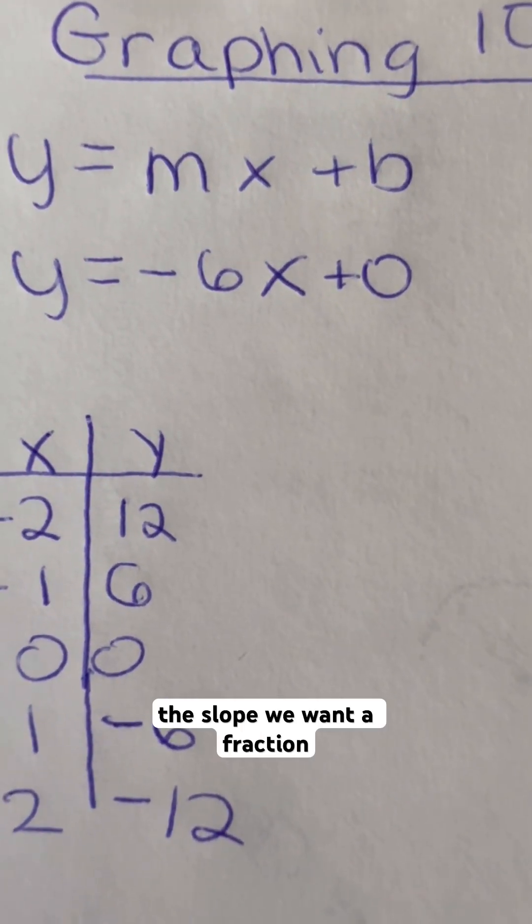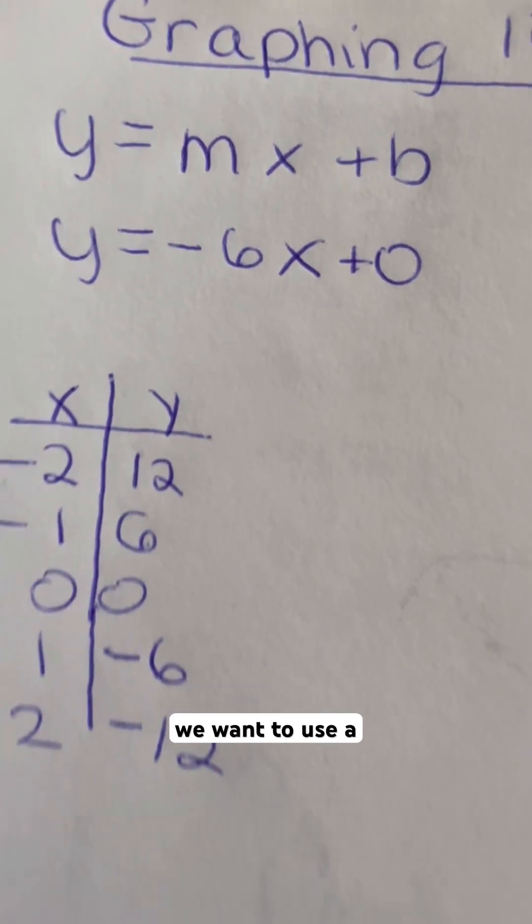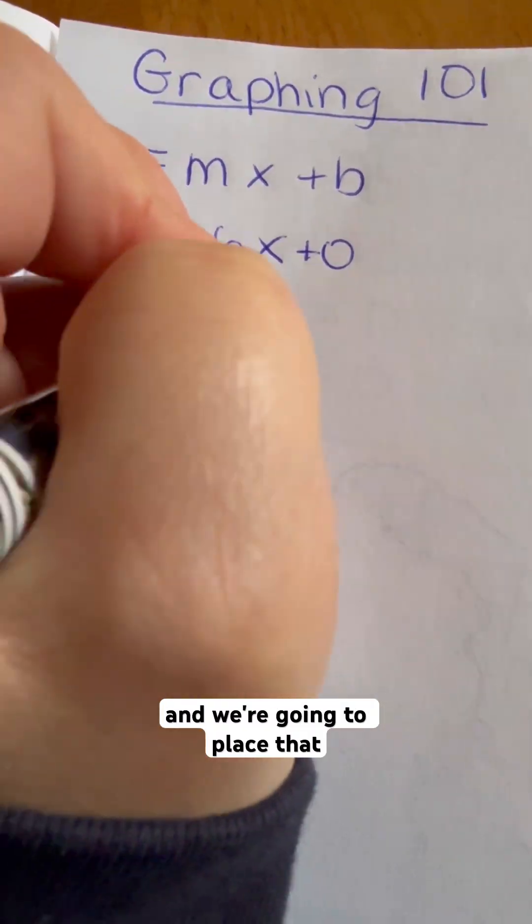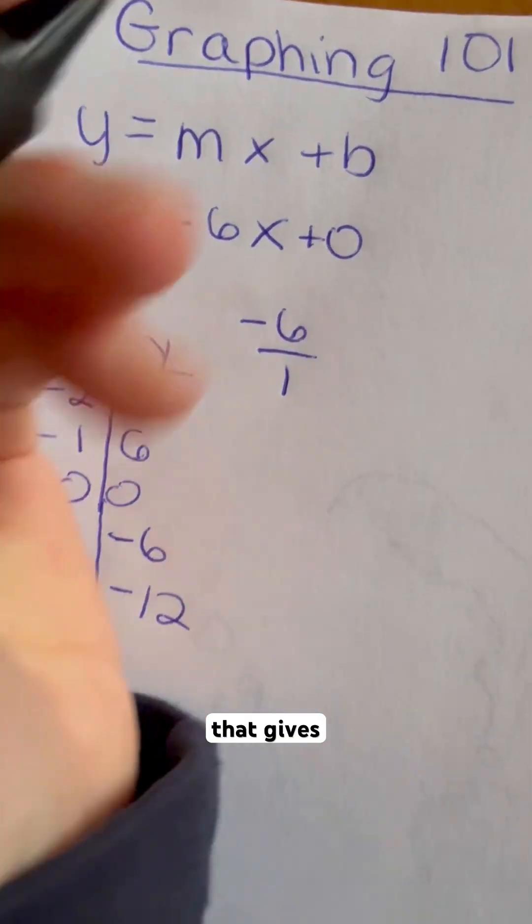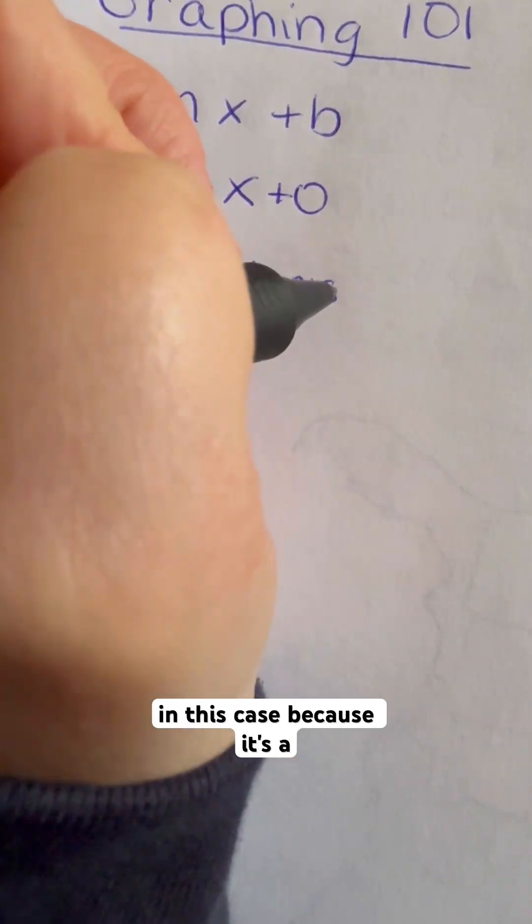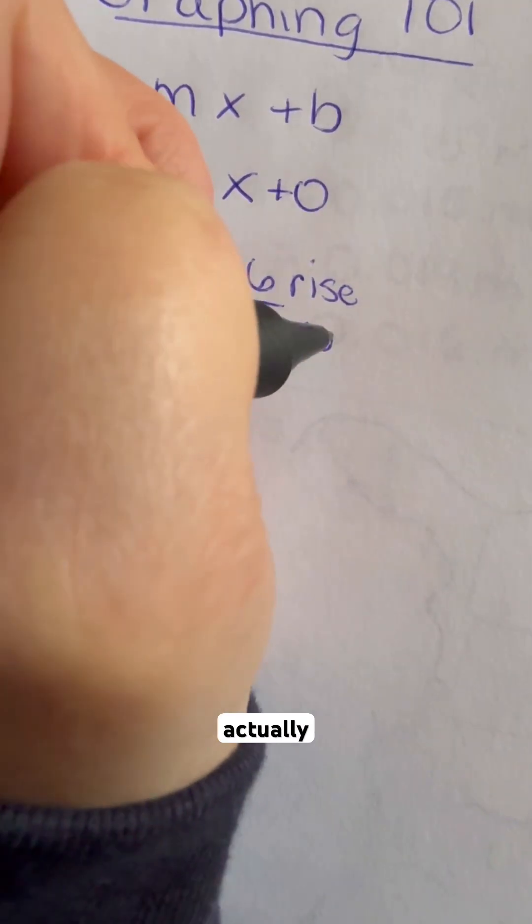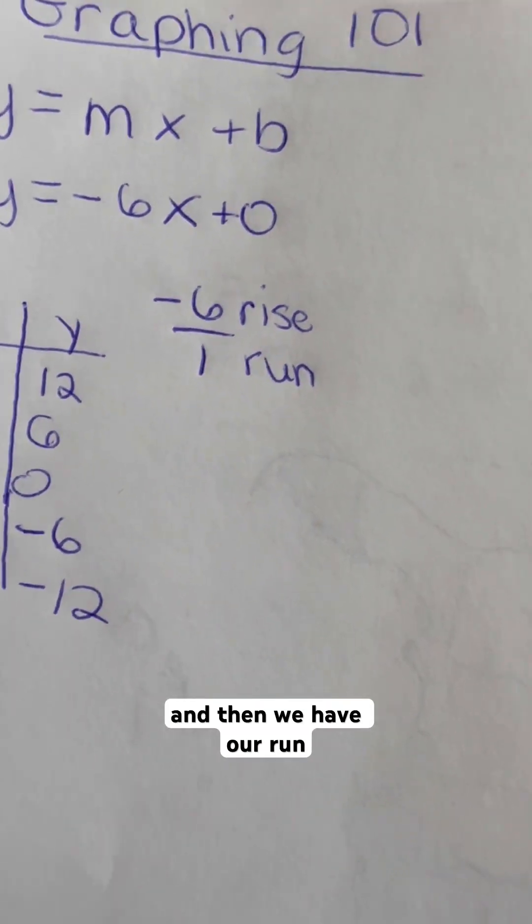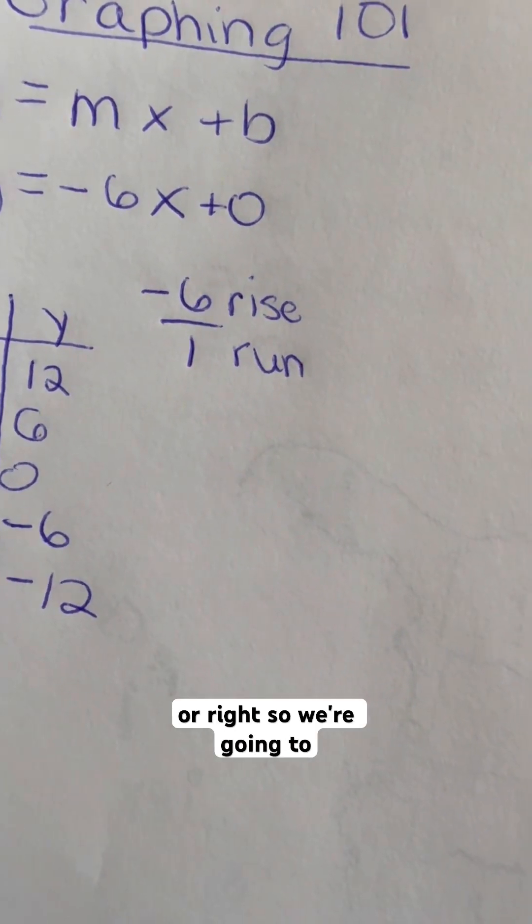Now, the slope, we want a fraction. We don't have a fraction, so we're going to do negative 6 and place that over 1. That gives me my rise. In this case, because it's negative, it's actually a fall. And then we have our run, which moves our point left or right.